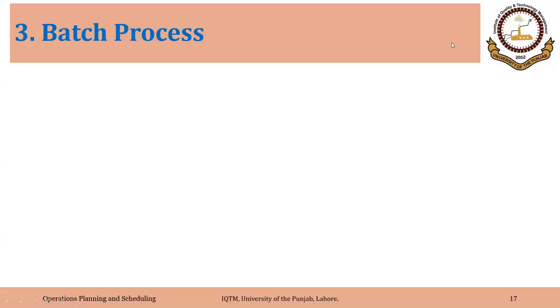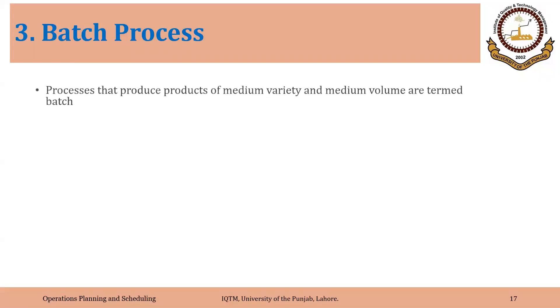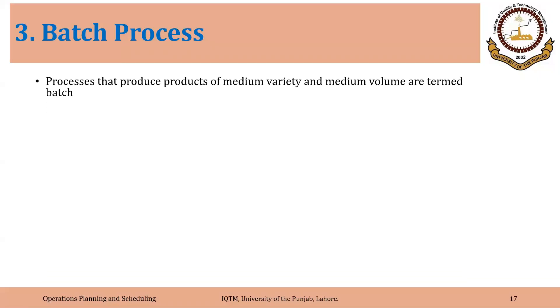The third type of process based on variety and volume is batch process. The processes that produce products of medium variety and medium volume are termed batch.